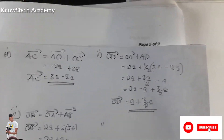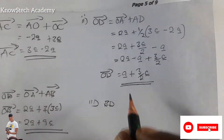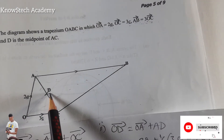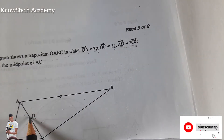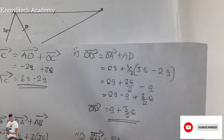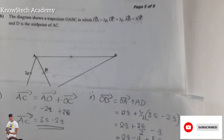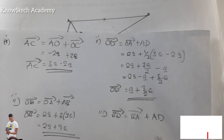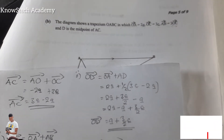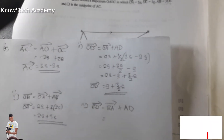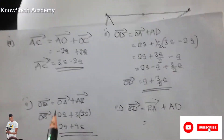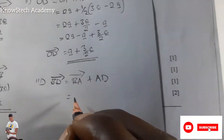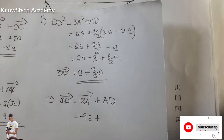Now we are asked to find vector BD. To find BD, we move BA plus AD. BA is the opposite of AB. AB is 9 vector c, so BA is negative 9 vector c, plus AD.